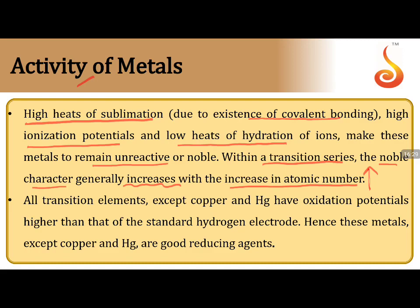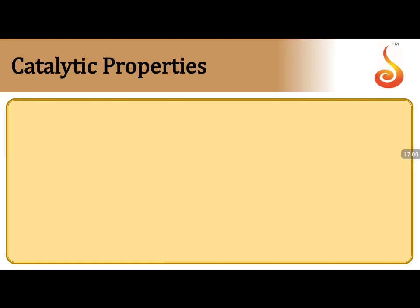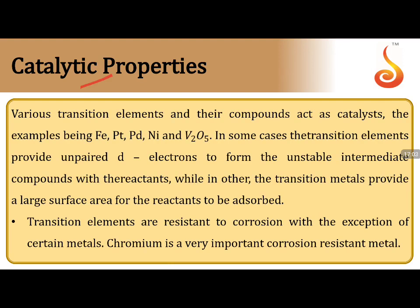For example, moving from chromium to molybdenum to tungsten (same +6 oxidation state), chromium is the strongest oxidizing agent while molybdenum and tungsten remain more inert. All transition elements except copper and mercury have oxidation potentials higher than the hydrogen electrode, making them good reducing agents. Silver and platinum are also exceptions.